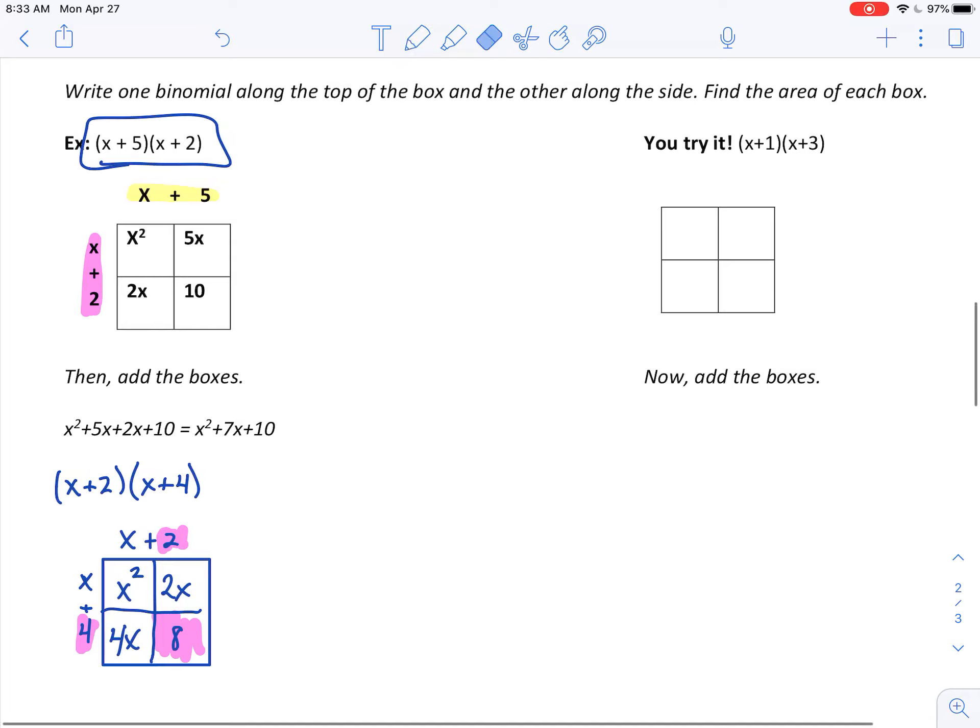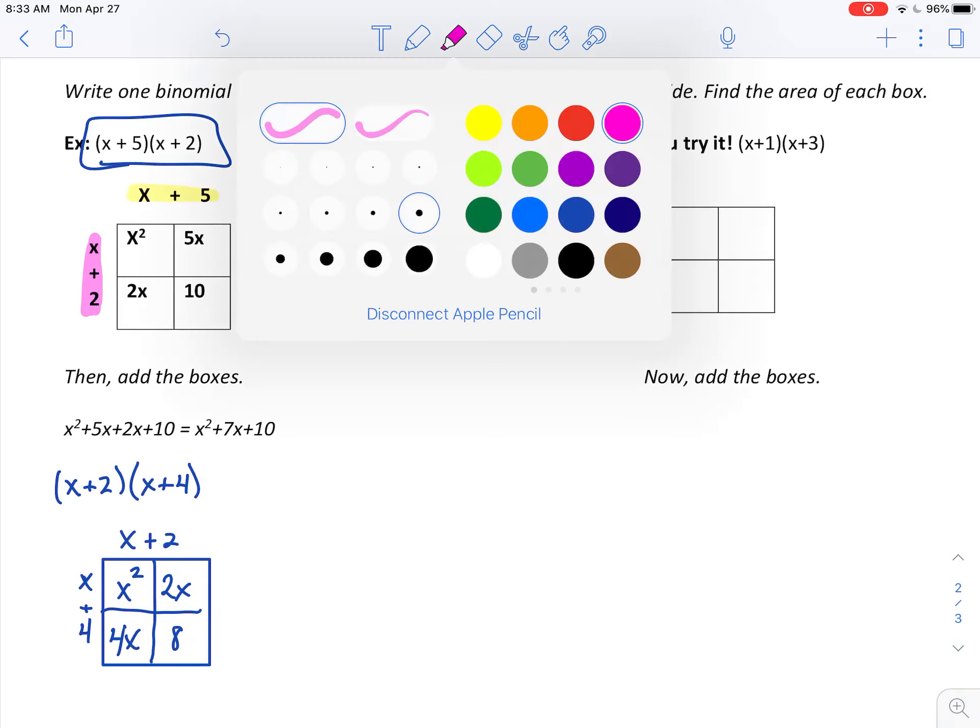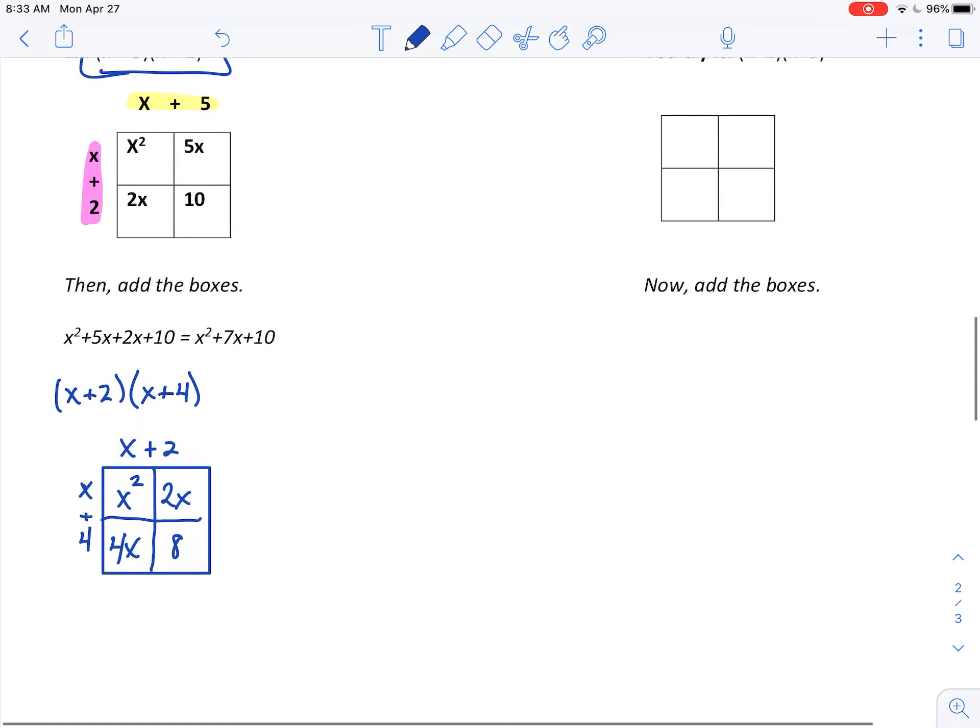Let's try this box. Length of x, width of 4. So 4 times x is 4x. And our very last one. We have 2, length of 2 and a width of 4. So 2 times 4 is 8.